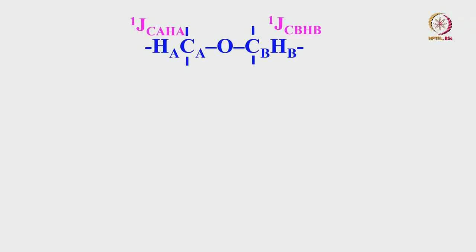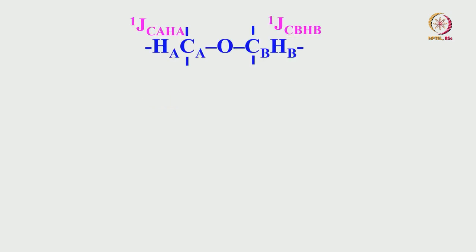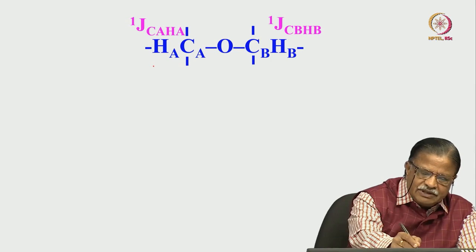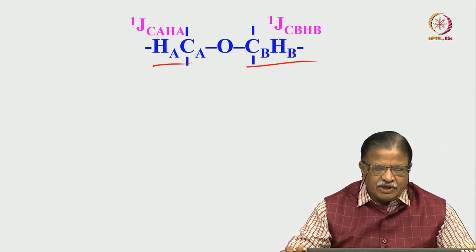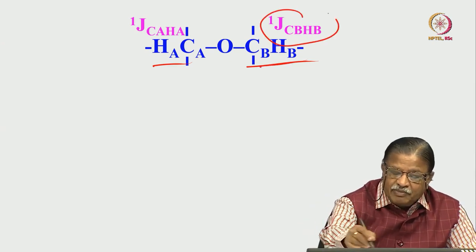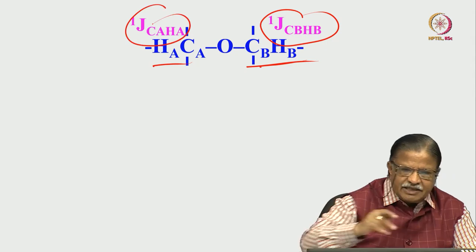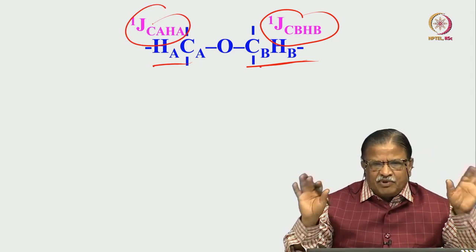The gradient ratio should be 1:4 for proton-carbon and 1:10 for nitrogen-15, as we calculated. With this, we have understood quite a bit about inverse experiments. Now we need to know how we get the peaks and how to interpret the cross peaks. We will start today with cross peaks in HSQC, discussing their types and how to interpret them. Consider a hypothetical molecule with CA and CB — carbon A attached to proton A, carbon B attached to proton B, with one-bond couplings J(CA,HA) and J(CB,HB).